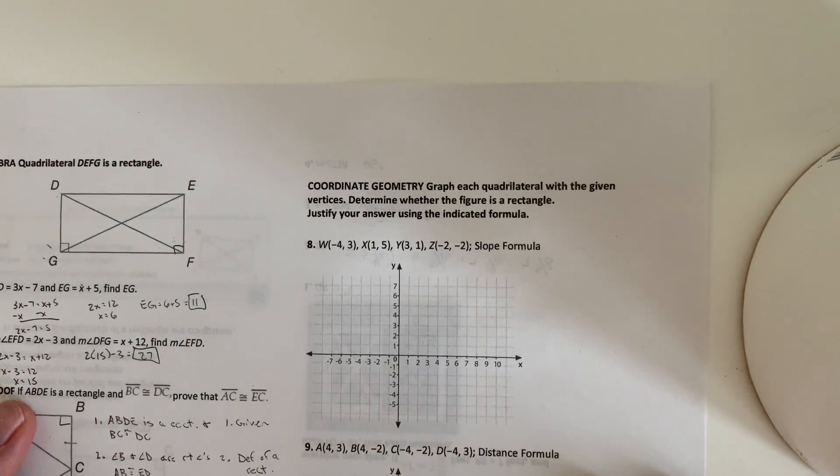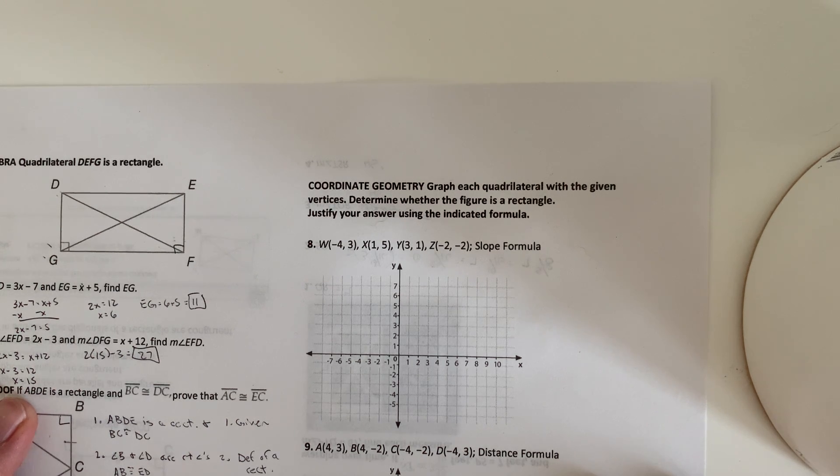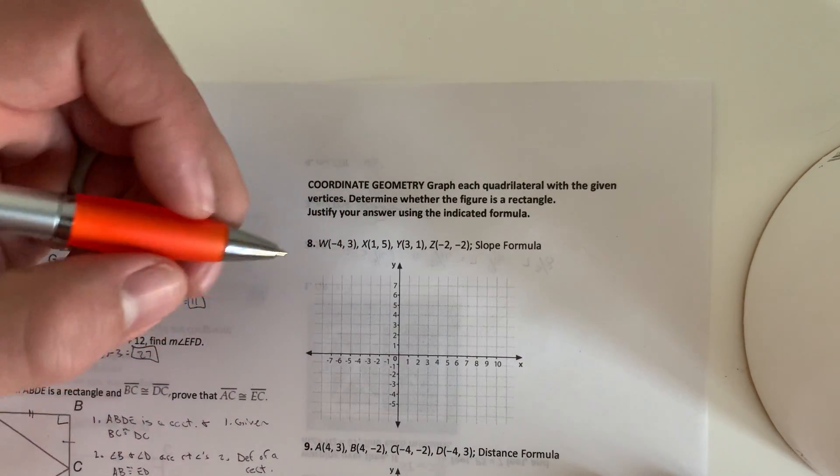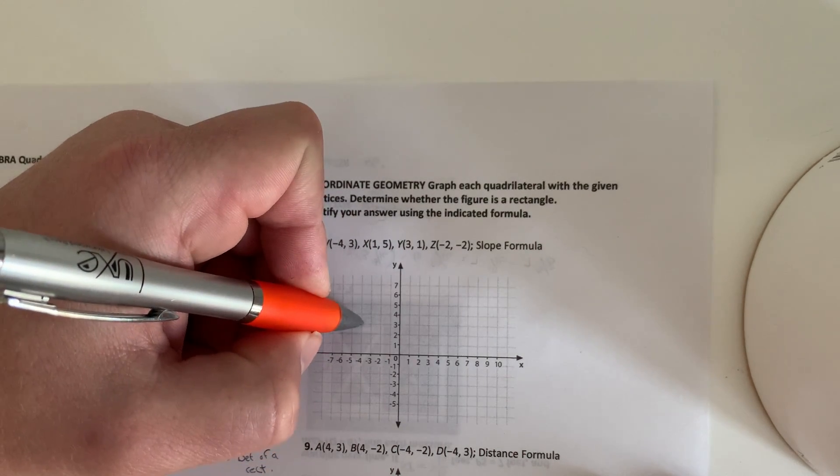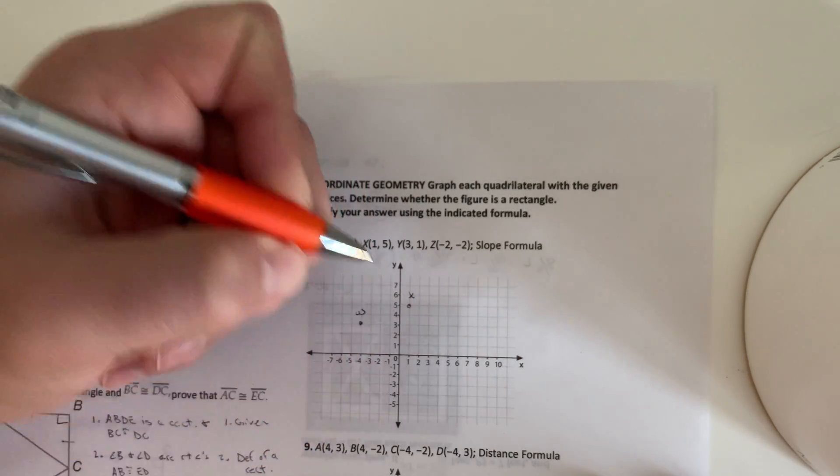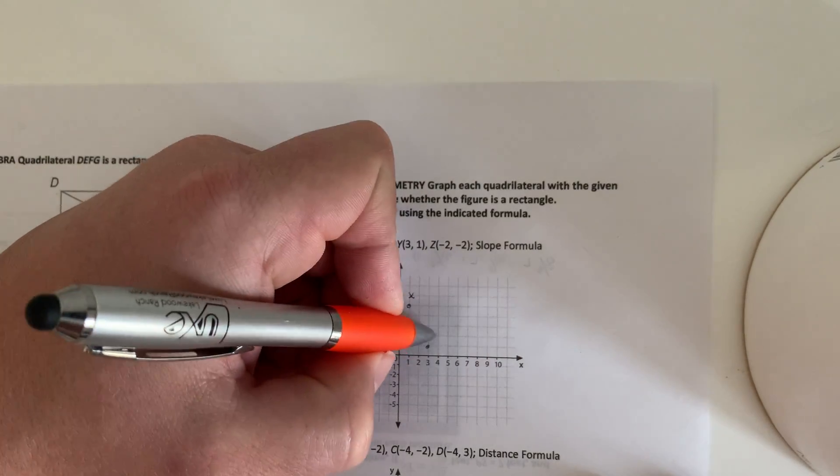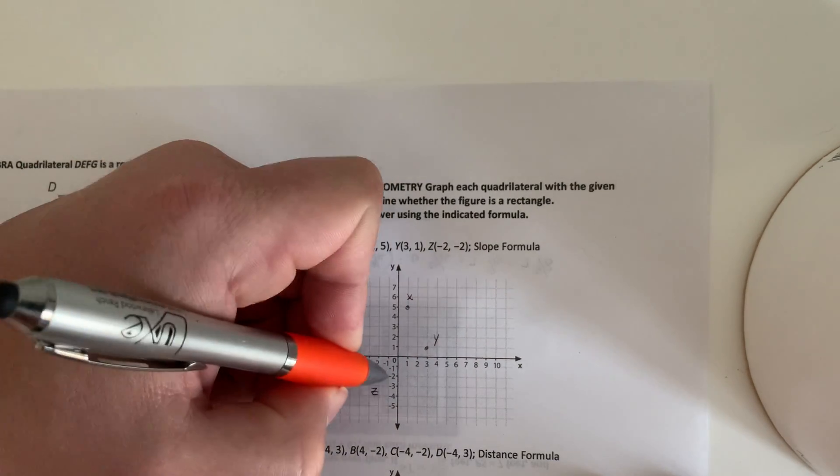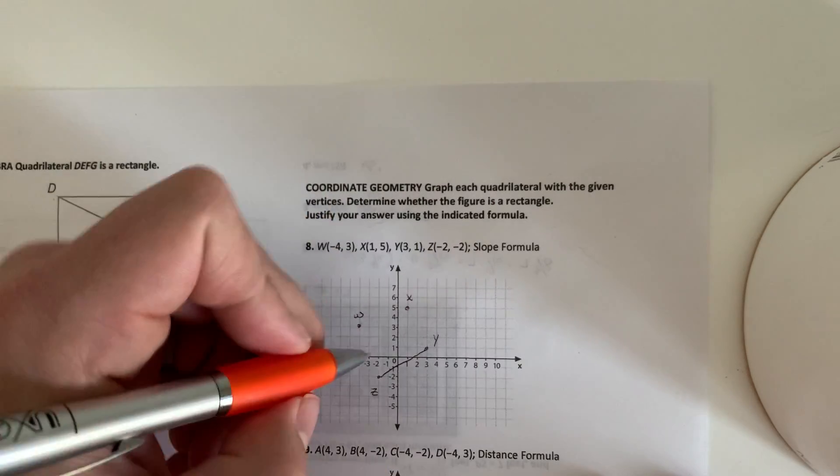So now the last two. Graph each quadrilateral with the given vertices. Determine whether the figure is a rectangle. And justify your answer using the indicated formula. So we're going to go ahead and plot this at negative 4, 3, which is W. X is at 1, 5. Y is at 3, 1. Z is at negative 2, negative 2. So this is our rectangle here.